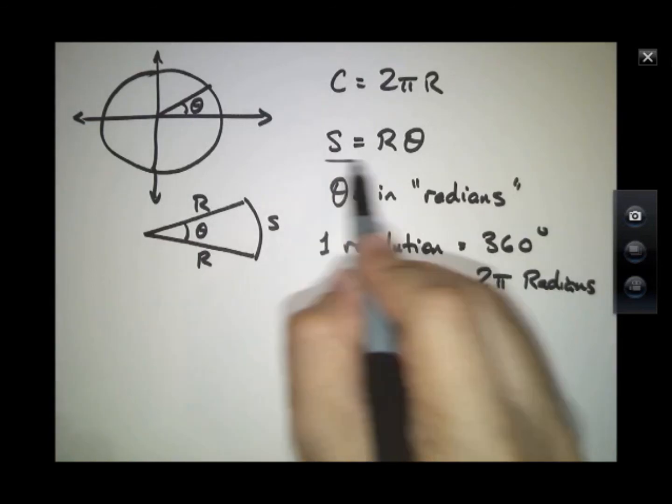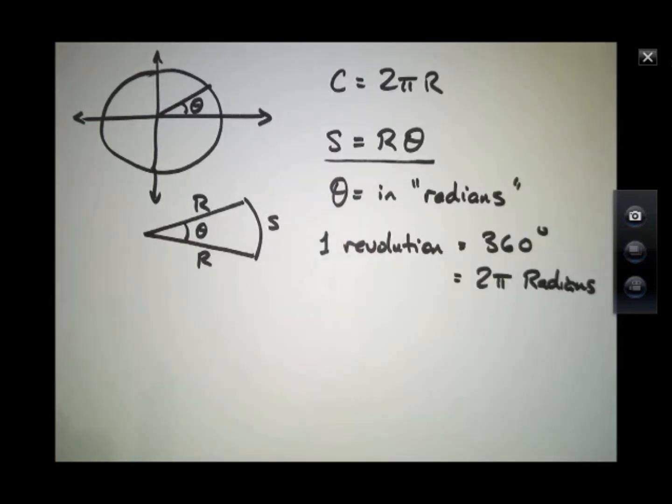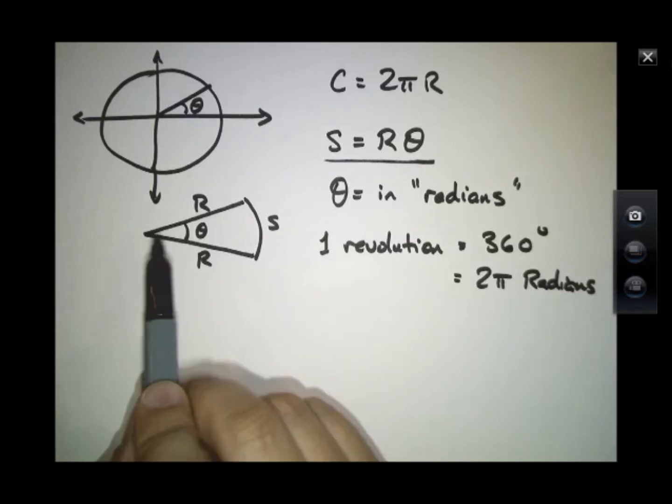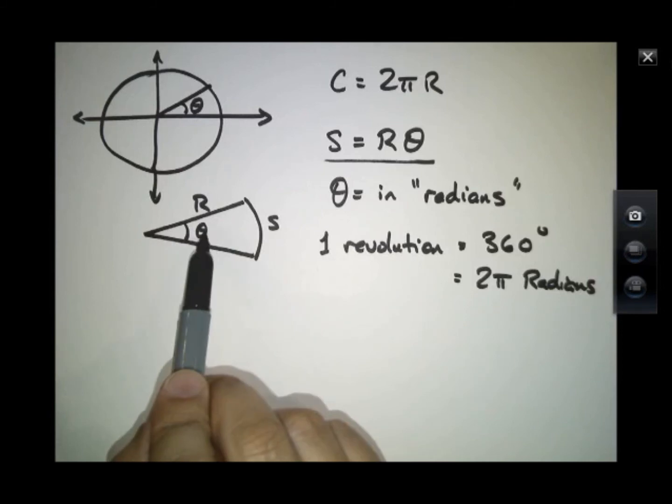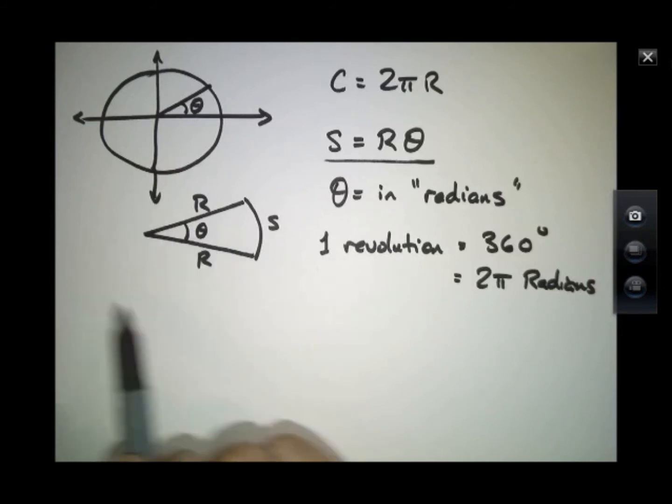So this expression works as long as I measure theta in this new unit. So if theta is less than 2 pi, then it means I have a wedge like so. If it gets up to equal to 2 pi, then I have one revolution, and I get back to 360 degrees, and I get what I expect with the circumference as 2 pi r.